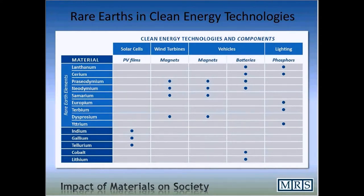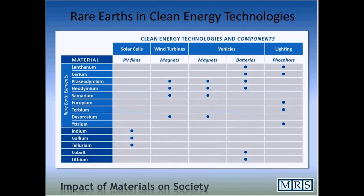Here's a more organized list of where rare earths are used. Photovoltaic films in solar cells can use indium, gallium, and tellurium — none of those are rare earths, but they're considered critical materials. The best magnets used today — the strongest and lightest — are typically made out of neodymium, iron, and boron, and may contain praseodymium and dysprosium, all rare earth elements. Those show up in generators and motors. In your car, rare earth materials such as cerium are found in the catalytic converter.